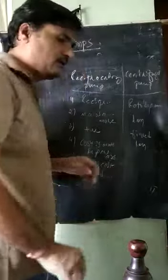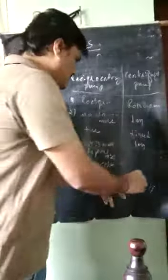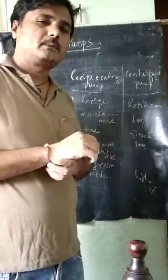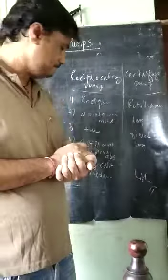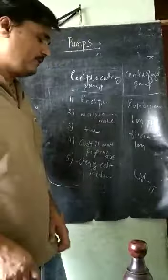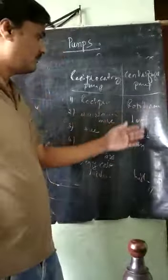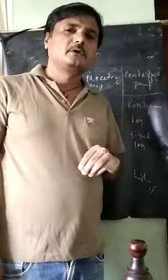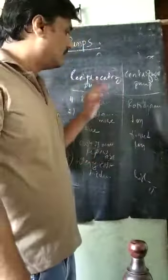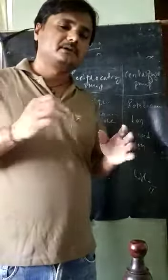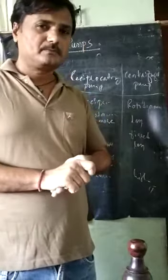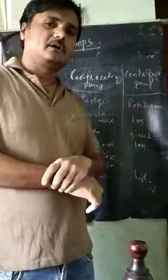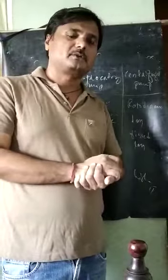Regarding design cost, the reciprocating pump is medium because of the piston and cylinder, while the centrifugal pump is somewhat high because of the blades and roto-dynamic components. For domestic purposes, centrifugal pumps are used, while for industrial purposes reciprocating pumps are used.